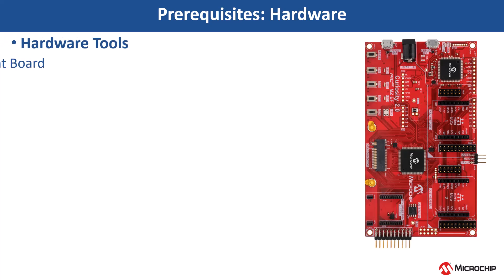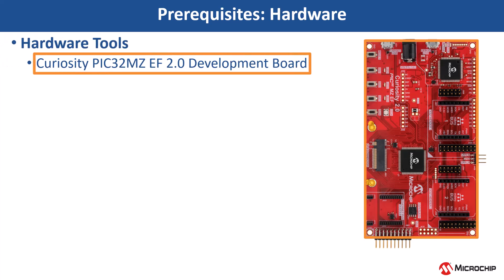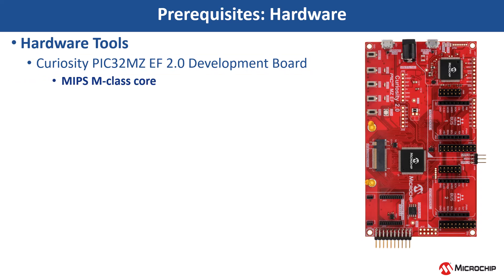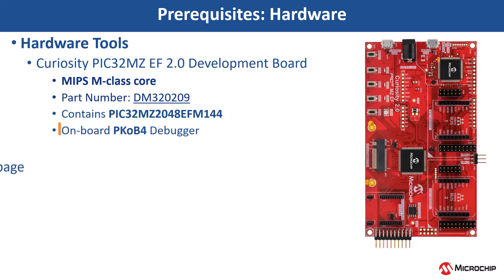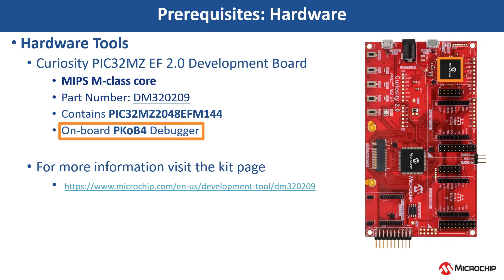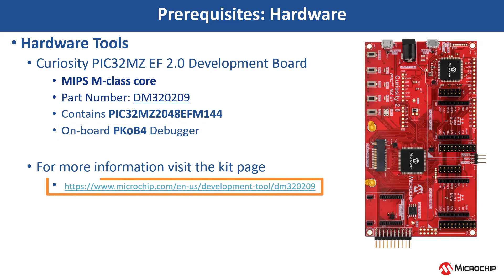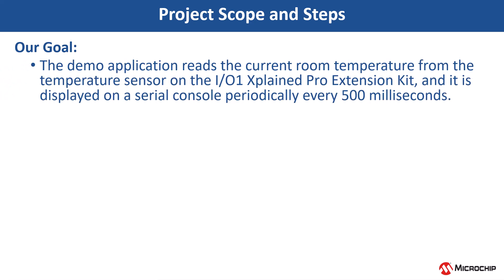For this demonstration, we will use the PIC32 MZEF 2.0 Development Board. This project is based on a MIPS-based PIC32MZ204EF M144 MCU. This kit has a PKOB4 debugger. For more information, visit the Kit page. The demo application reads the current room temperature from the IO1 Xplained Pro Extension Kit, and the temperature read is displayed on a serial console every 500ms.